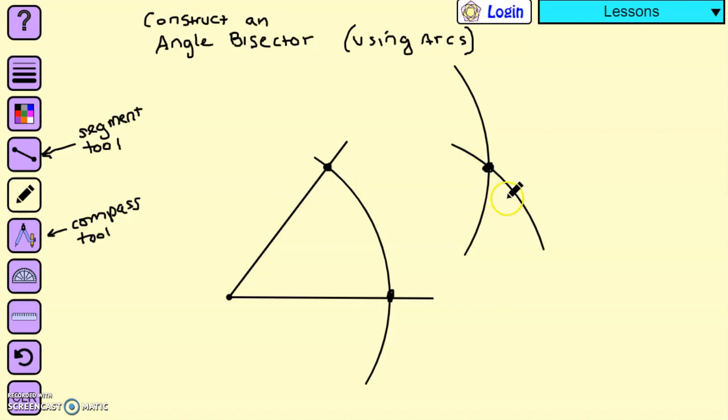I'm going to put a point there, and now I'm going to connect the vertex of that angle with where the arcs intersect, and I have just constructed an angle bisector.